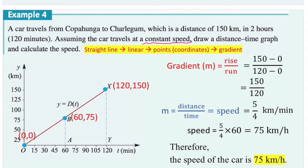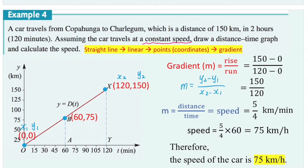We want to calculate the speed, and we know this is a linear graph, so at any given point the gradient will be the same. Taking our starting point and end point, we calculate the gradient using rise over run: x1 = 0, x2 = 120, y1 = 0, y2 = 150. So gradient = (y2 − y1) / (x2 − x1) = (150 − 0) / (120 − 0), which simplifies to 5/4 kilometers per minute.